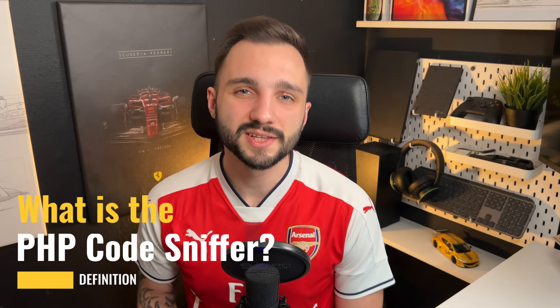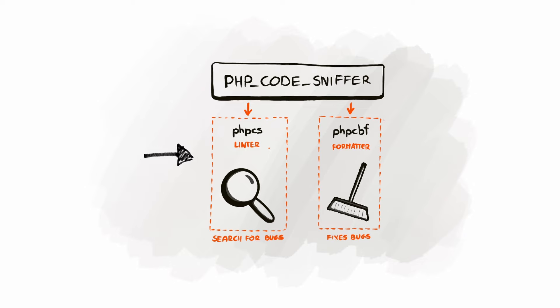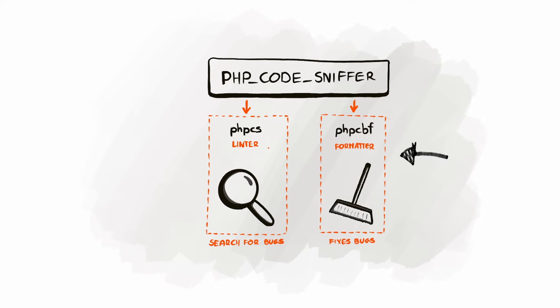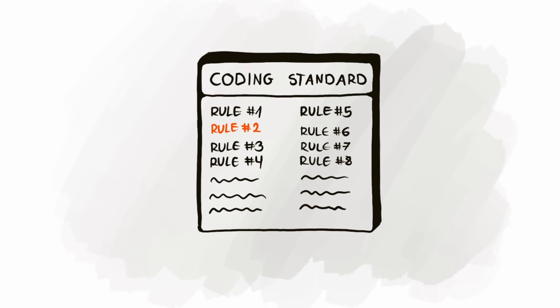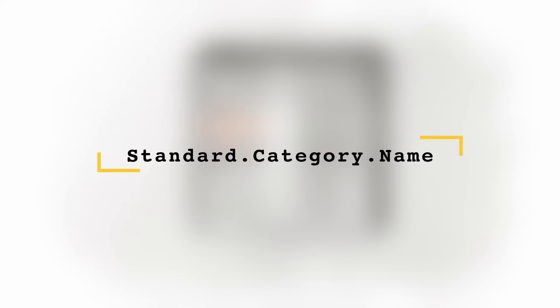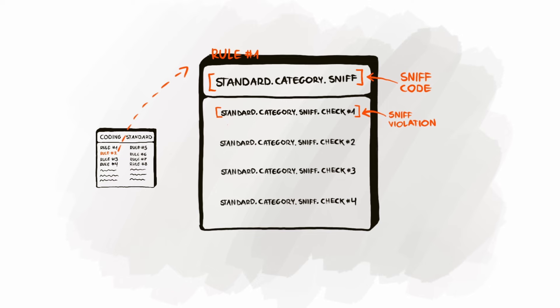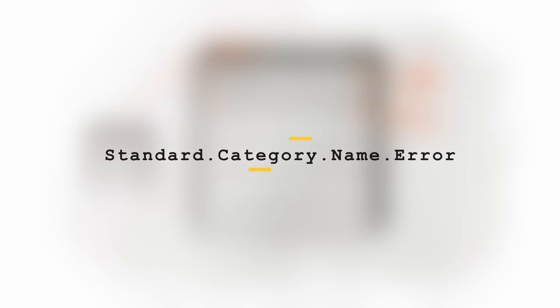PHP Code Sniffer is a command line tool that ensures your PHP code remains clean and consistent with specific coding standards. It consists of two scripts: phpcs, the linter that checks what is wrong with the code, and phpcbf, the formatter that tries to fix problems. A coding standard in PHP Code Sniffer is a collection of sniffs, each identified by a code using the standard.category.name pattern. A single sniff is designed to find one or more rule violations, which also have unique identifiers following the standard.category.name.error pattern.